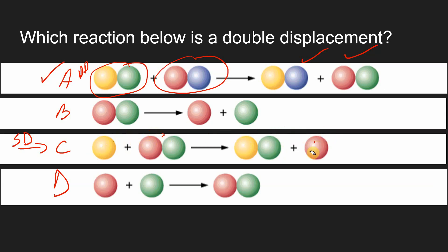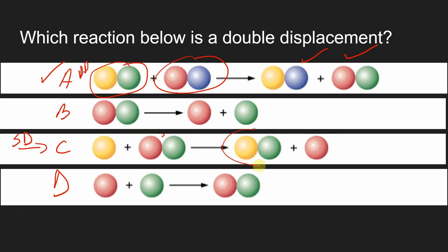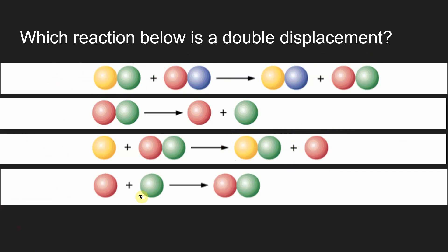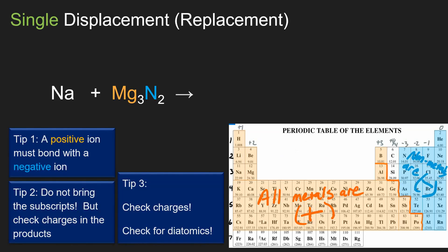Let's think about predicting the products. Is it the compound or the lone element that you need to check for diatomic elements? Definitely the lone element — because it might be oxygen, chlorine, or something diatomic. For the compound, we're going to have to check charges. So we'll get to check charges and check for diatomics as part of finishing our sequence of reactions.